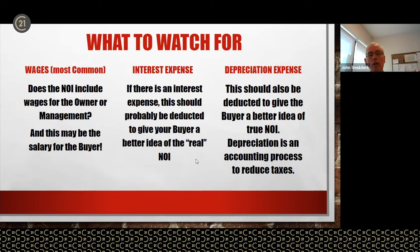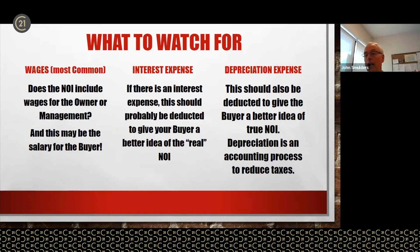What to watch for — a synopsis. Wages: does the NOI include wages for the owner or management? This may be the salary for the buyer. Interest expense and depreciation expense: you need to check for these three things when looking at an income statement. For a buyer, take away the interest and depreciation expenses, or add in a management salary if needed. These three items are flexible in an income statement.